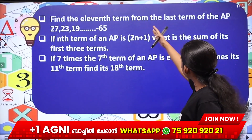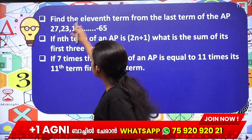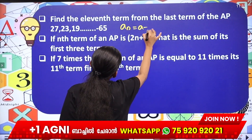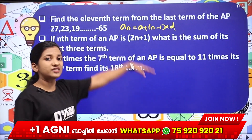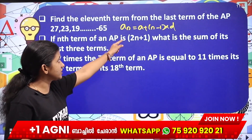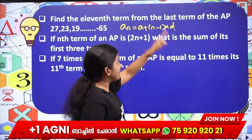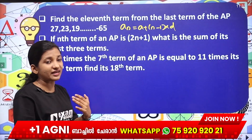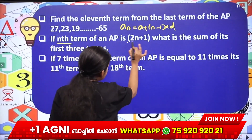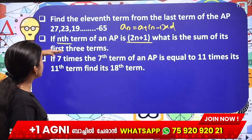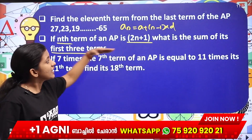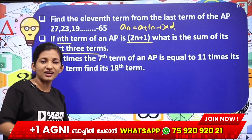Find the 11th term from the last term of the AP. We use the arithmetic progression formula. An equal to a plus n minus 1 into d. The first term is 'a', the common difference is 'd', and the number of terms is n. Consider these values.